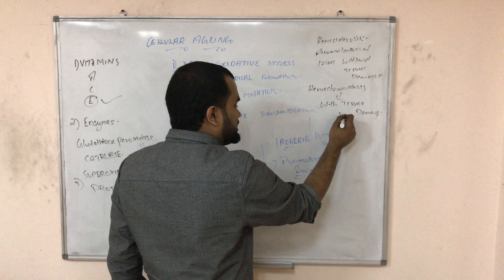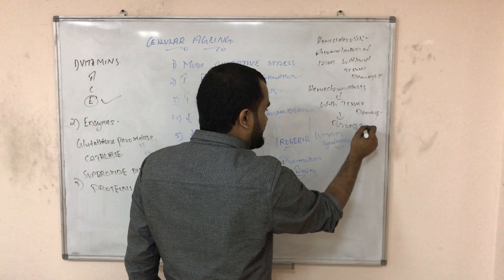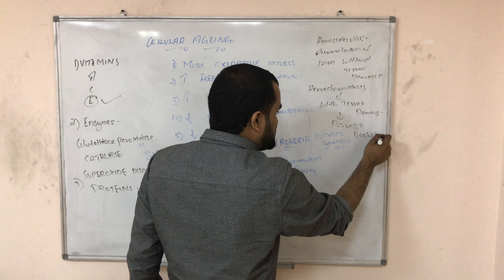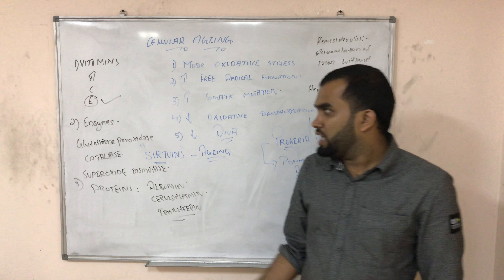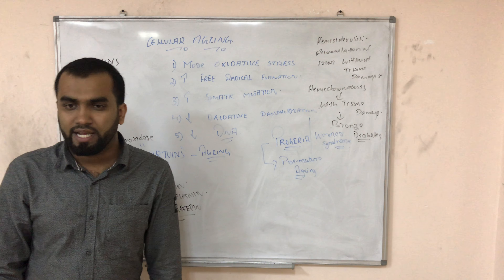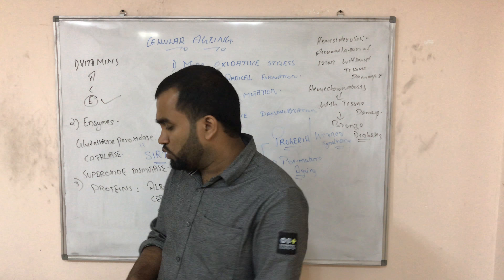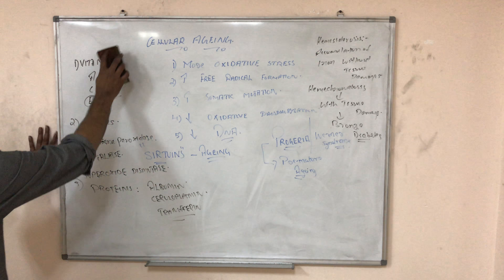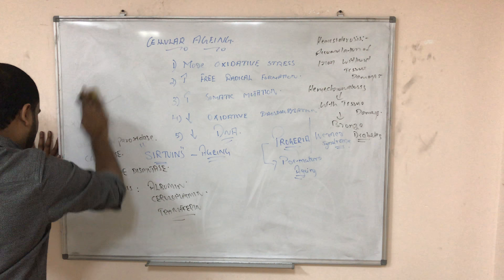In hemochromatosis, when iron gets deposited in the pancreas it is also called bronze diabetes. This is a key exam point. That covers cellular aging.